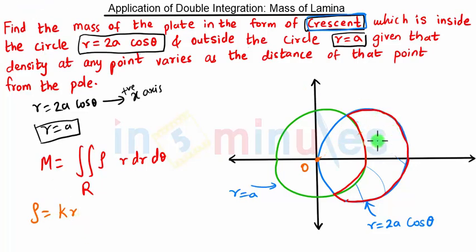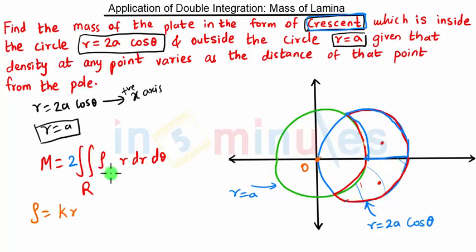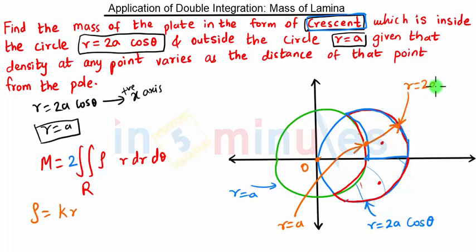We have to find the mass of this area. Since the upper and lower parts are exactly the same, we will find the mass only for the upper part and multiply by 2 so that the entire area is covered. Since it is a polar coordinate, we consider a ray starting from one point and ending on another, covering only this portion. The lower end of this ray is on circle r equal to a and the upper end is on circle r equal to 2a cos theta.